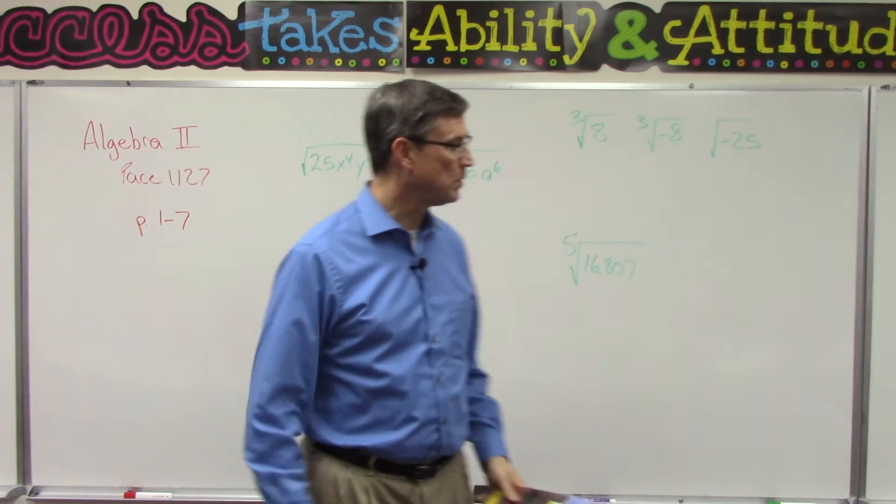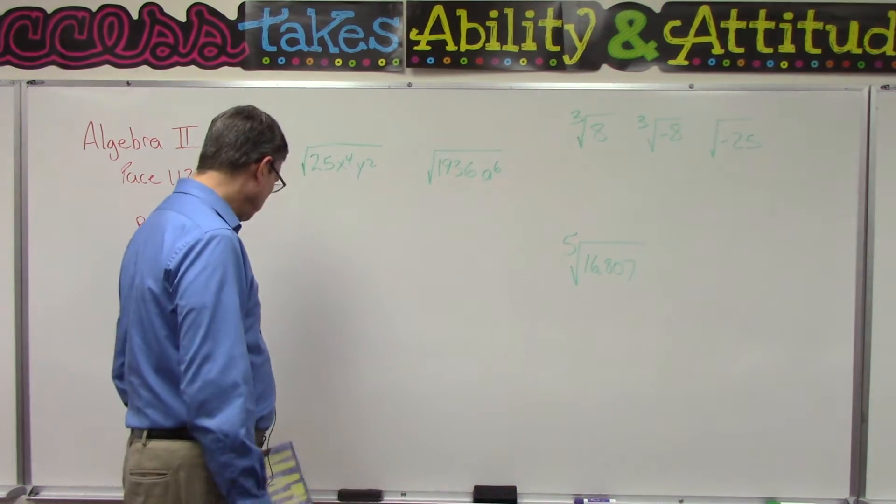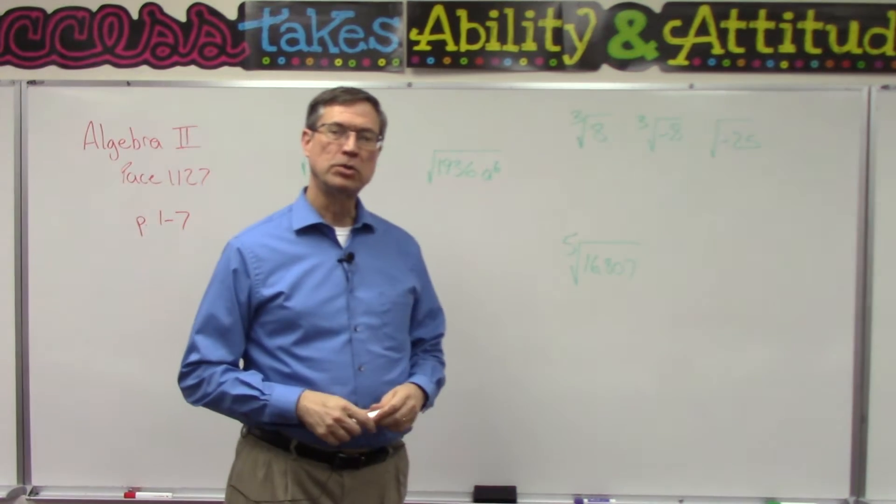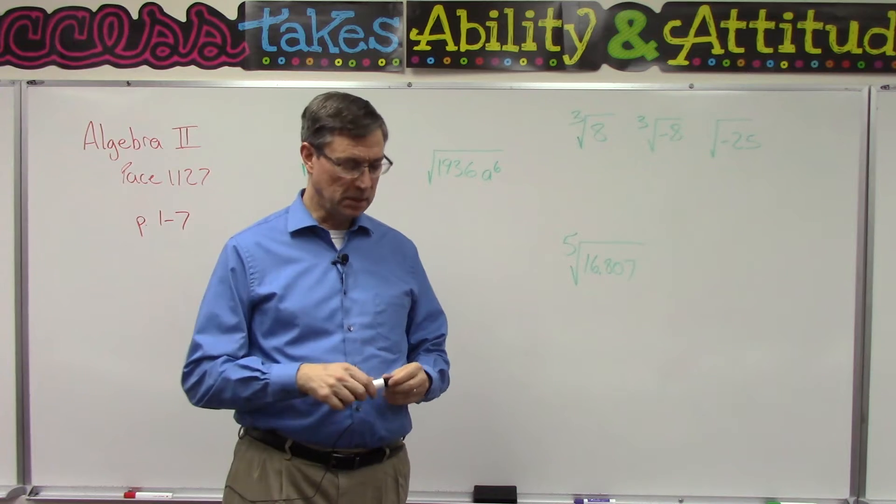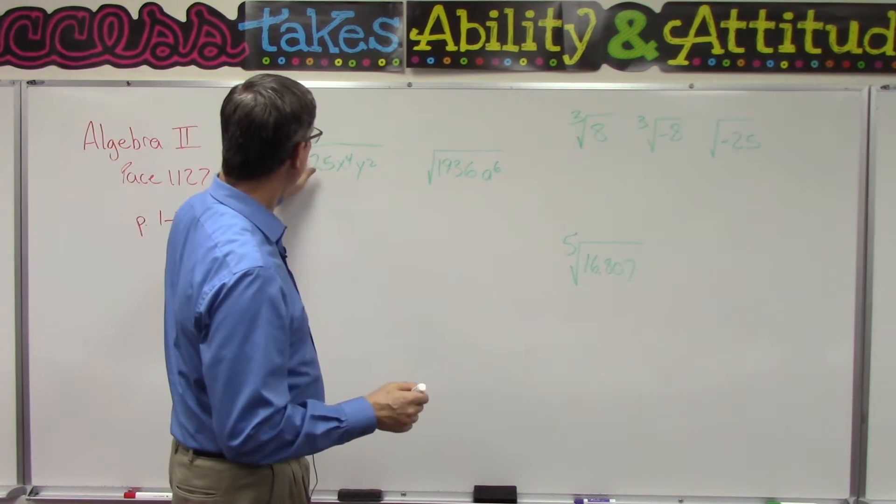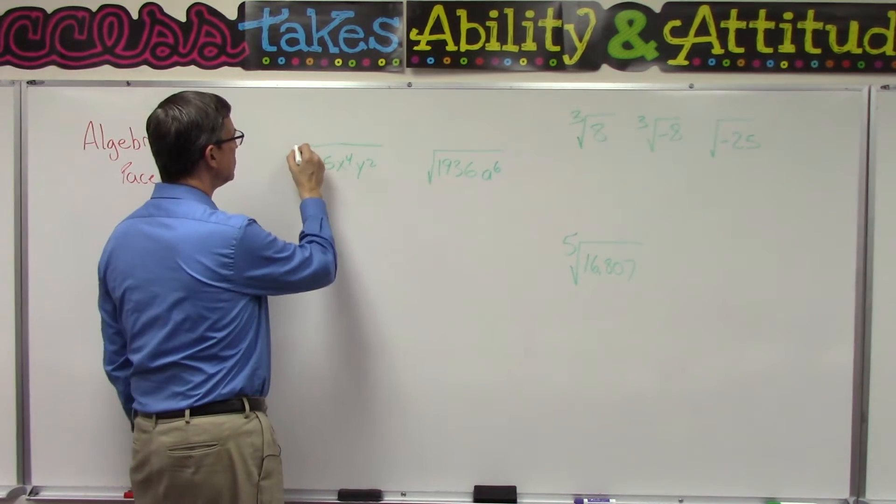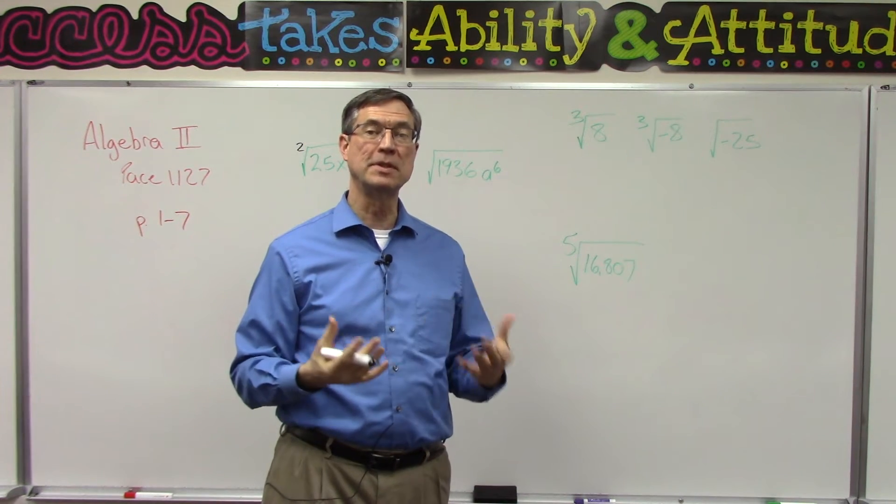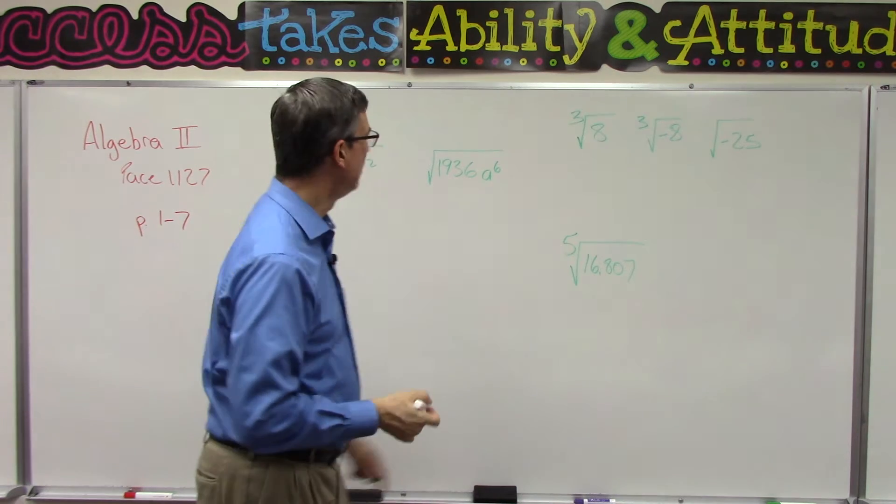Let's talk about what the radical, the square root sign, means. If there's no number written here, we can assume it's a two, and that tells us we're trying to find a number that multiplied times itself—okay, so only twice—will give us that number.